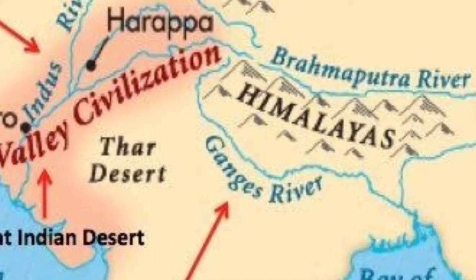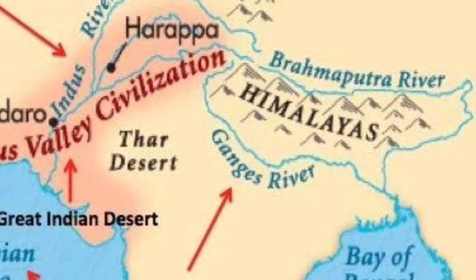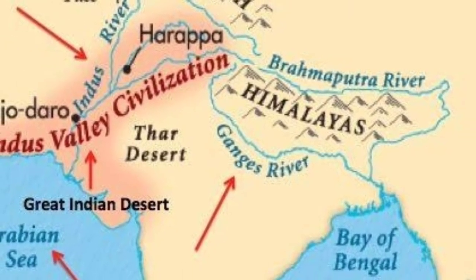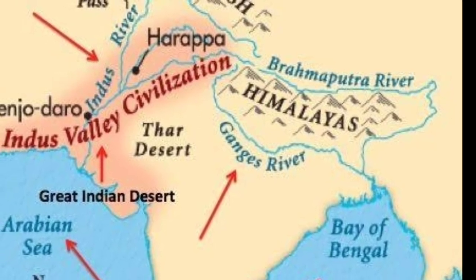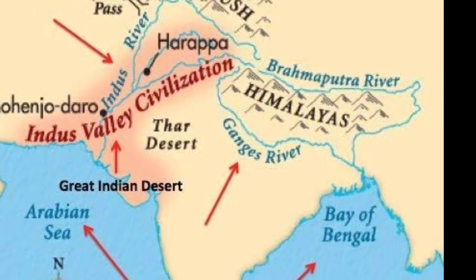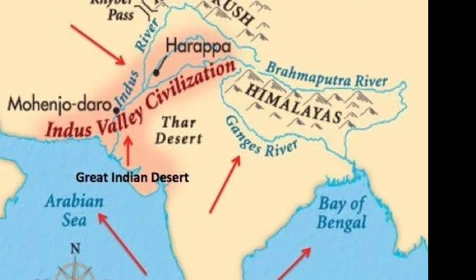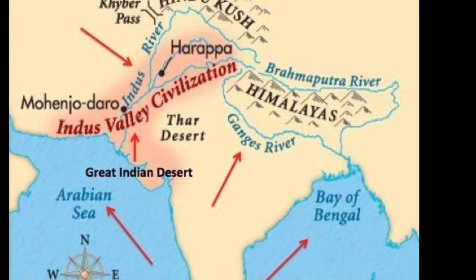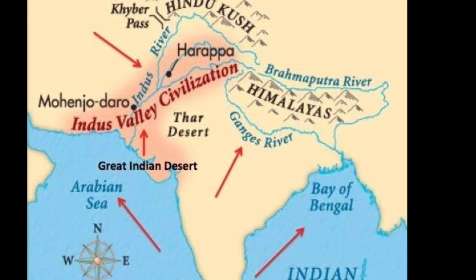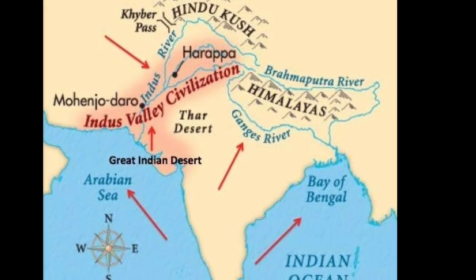The geography of this region is quite different compared to the rest of the ancient civilizations in Asia, because it is isolated by mountain ranges like the Hindu Kush, Himalayas, and Karakoram in the north, while it is surrounded by the Arabian Sea in the west, the Indian Ocean in the south, and the Bay of Bengal in the east. Hence, this region is also called a subcontinent.